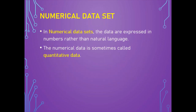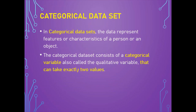There are other types of datasets: numerical and categorical. In numerical datasets, data are expressed in numbers rather than natural language — also called quantitative data. For example, the number of pages in a book, or the weight and height of a person. Categorical datasets represent features or characteristics of a person or object, consisting of categorical variables — also called qualitative variables — that can take exactly two values, such as a person's gender (male or female) or marital status (married or unmarried).